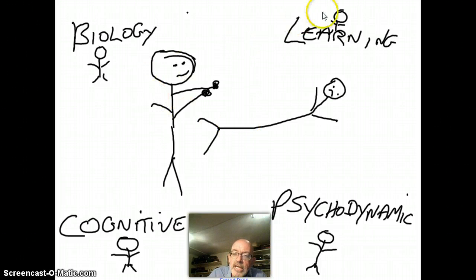Four different psychologists are standing around, looking and observing behavior, then thinking how would we explain it. A biological psychologist would say that the behavior comes from somewhere inside the body.